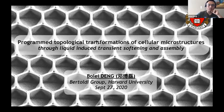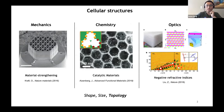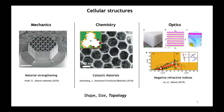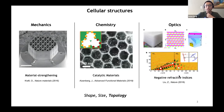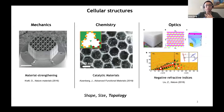We are doing that using simply a droplet of liquid, which induces transient softening and assembly. Cellular structures are widely used in many fields of science and engineering. For example, in mechanics they have been harnessed to build high-strength materials, in chemistry to build catalytic materials, in optics to build negative refractive index materials, and many others. The most interesting property of cellular structures is that their properties are not only determined by the composite material, but also controlled by the shape, size, and more importantly, the topology of the cellular structure.